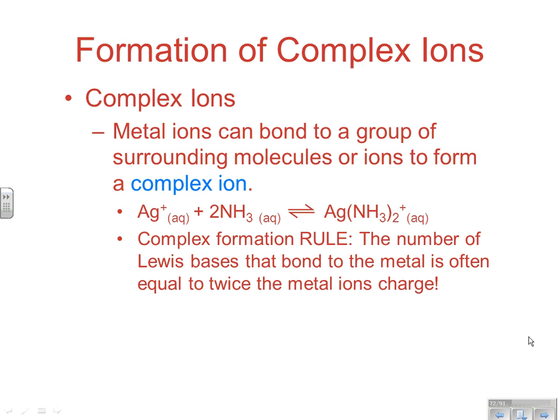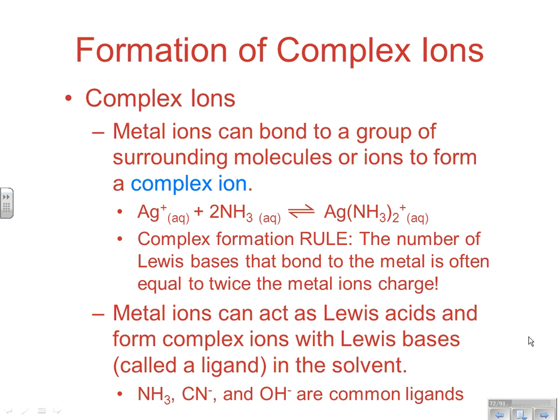Metal ions can act as Lewis acids. The ammonia NH3 has the electron pair in it sharing, so that's a Lewis base. So the metal ion is acting like a Lewis acid to form a complex ion with this Lewis base ammonia. That Lewis base is what's commonly referred to as a ligand. If you ever hear the term ligand, it's the Lewis base that's involved in the complex ion formation.